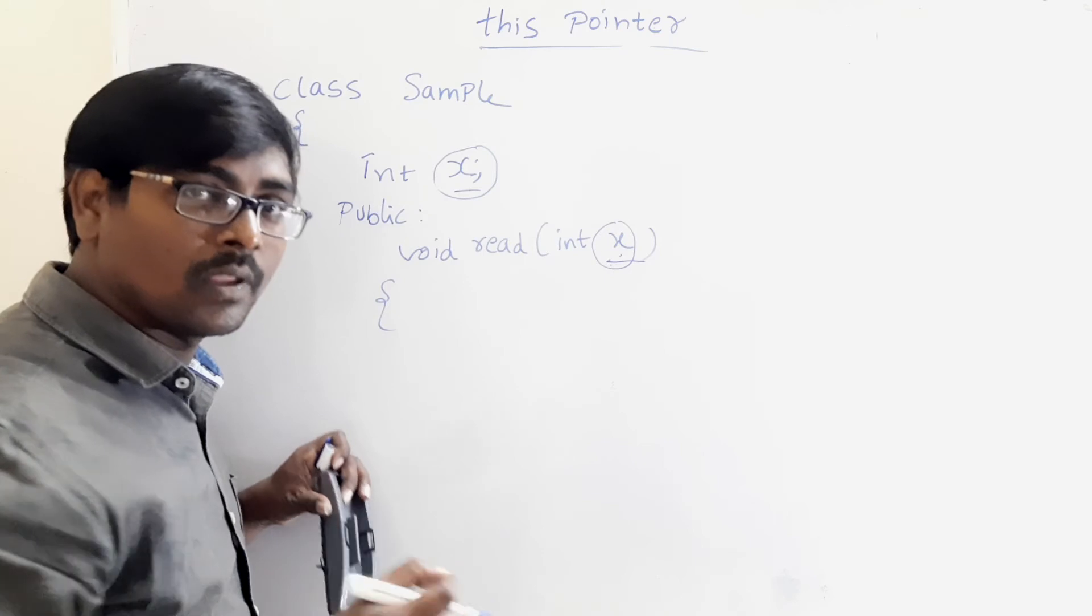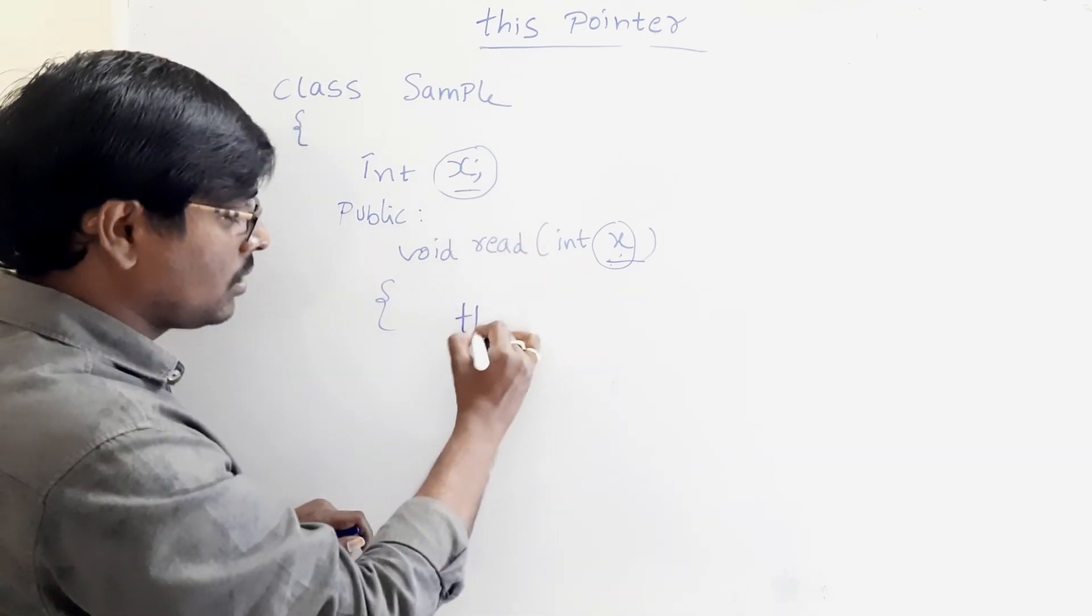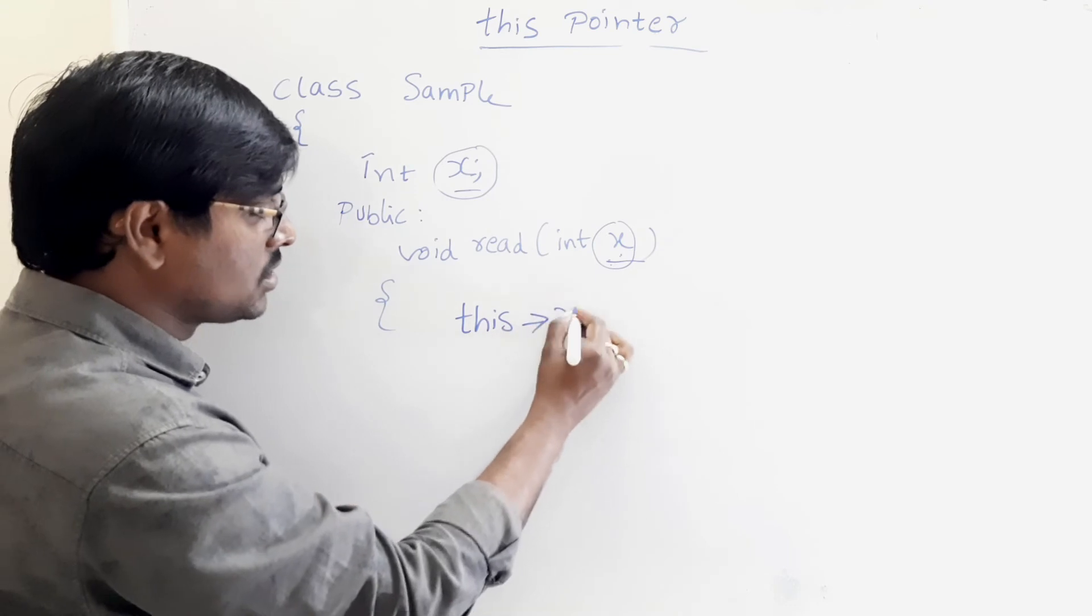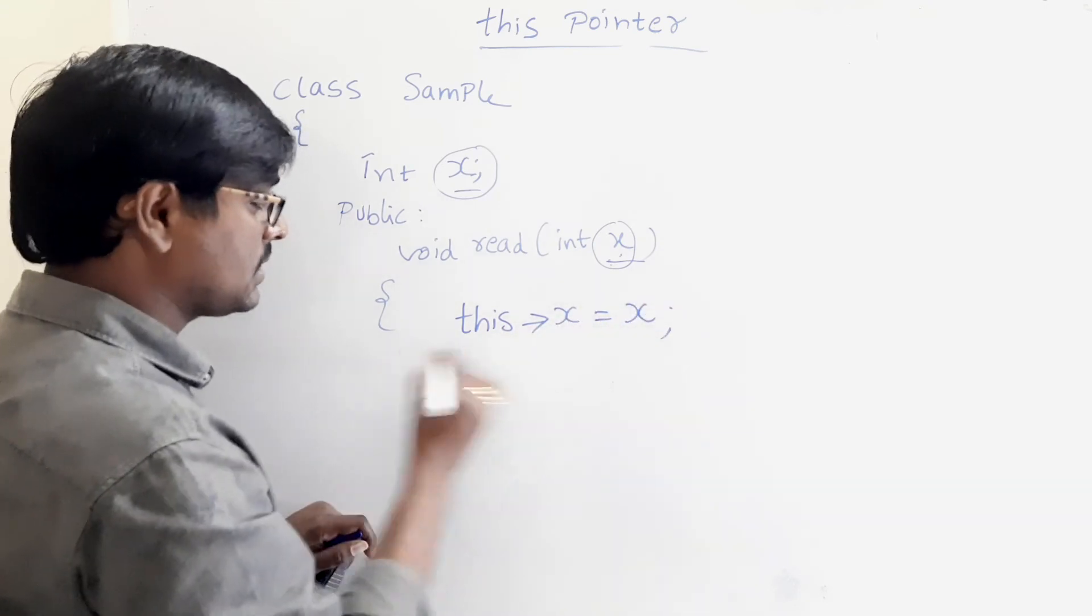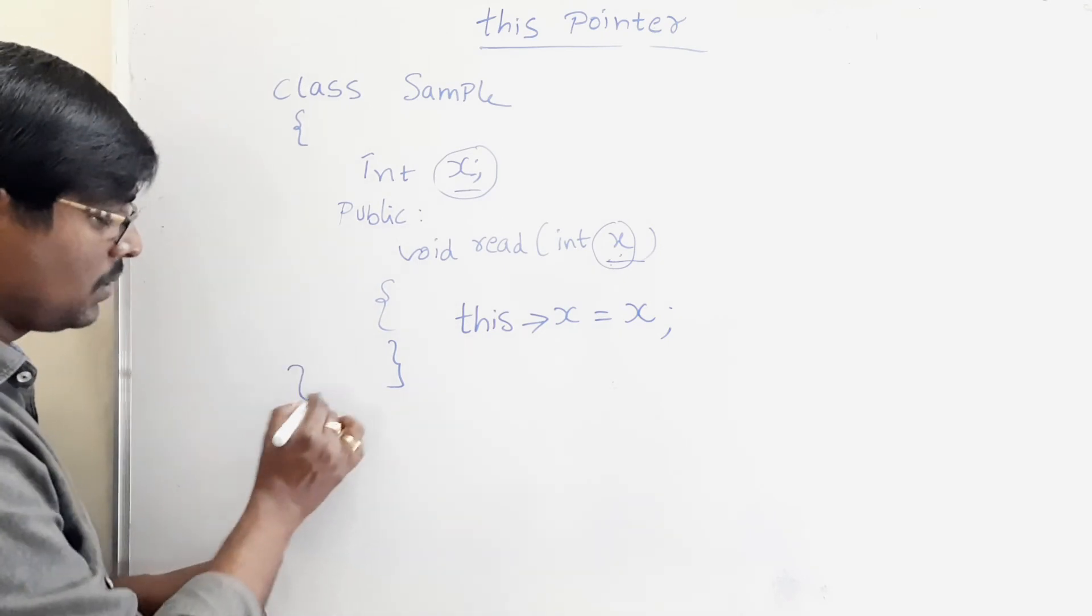In this case, to refer the object value, simply this arrow x is equal to x. This is the simple. This arrow x is equal to x. Simply, close the class.